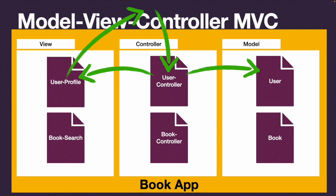In MVC, much like the three-layer architecture, only the center layer - the controller - has access to the other layers. The view can never access a model directly, and a model cannot access a view. You call a controller and it picks up data from models - the user controller can get data from the book model too if needed. Once it has all the necessary data to populate the user profile view, it sends the data there, and the view knows how to present it.